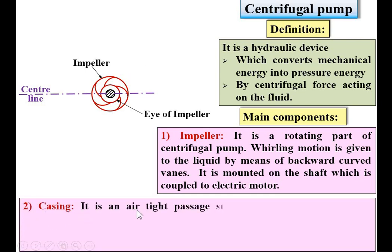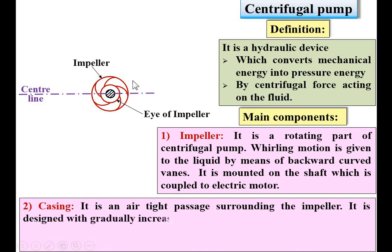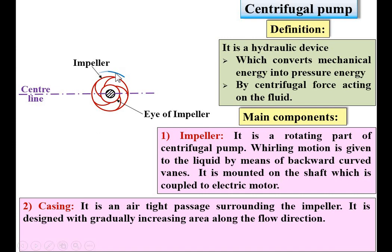Next part: casing. It is an airtight passage surrounding the impeller. It is designed with gradually increasing area — a very important point — gradually increasing area along the flow direction. I am going to draw the casing over here. You can see the flow direction goes from here to here, and the area gradually increases.